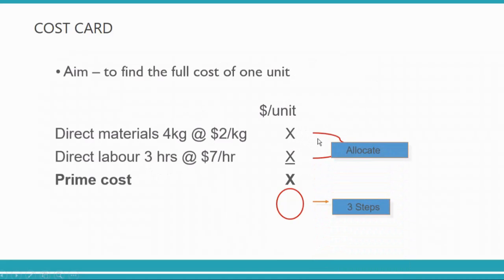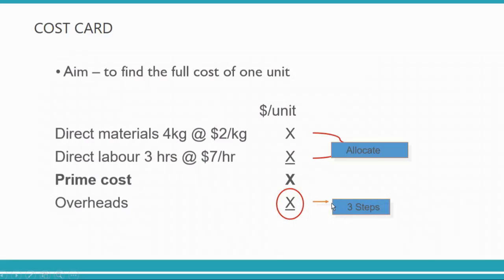This is called allocation — the word 'allocate' means any cost which you can directly attribute to the unit. Within the table, I know I'm using 4 kg of material — no ambiguity, I can measure it easily, so I allocate $8. I'm using 3 hours of labor which means $21 of labor — I can see it and measure it, so I allocate it. Allocated costs are those you can see, measure, and directly assign to the product. After direct costs, you also need to add overheads — material, labor, and overheads are the components. Prime cost equals all direct costs combined; prime cost plus overheads equals full product cost.